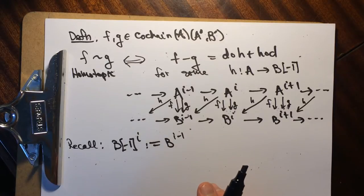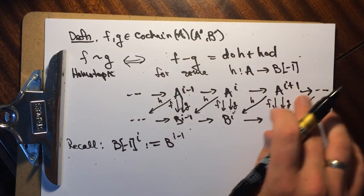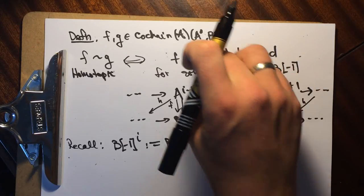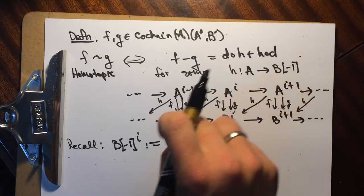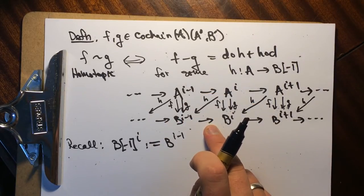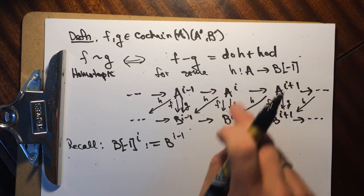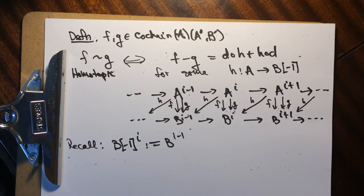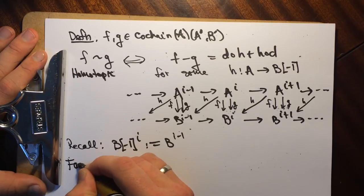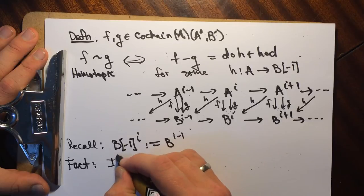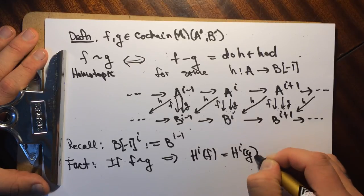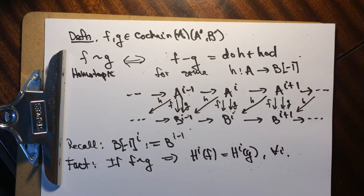We say they are homotopic if they're related by these two terms. We want a map from the i-th level to the i-th level, but h goes from the i-th level to the (i-1)-th level. There are two ways to get back: either apply f then d, or apply d then go back — and this is the combination of both. A fact: if f and g are homotopic, then they induce the same map on cohomology.